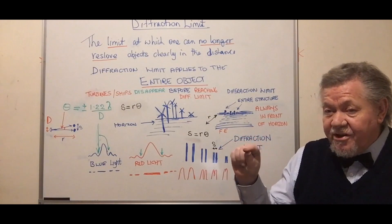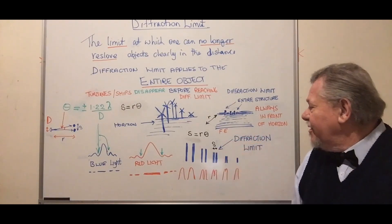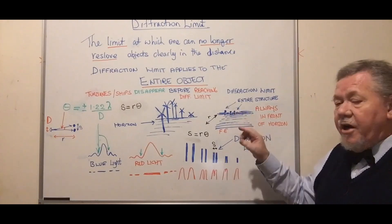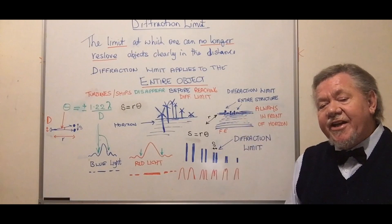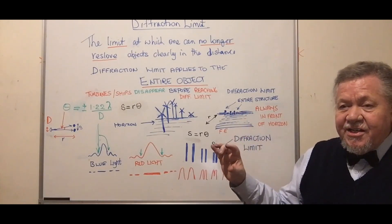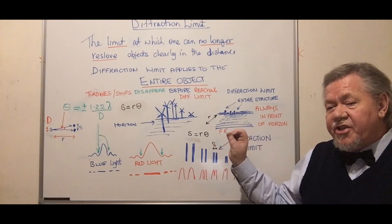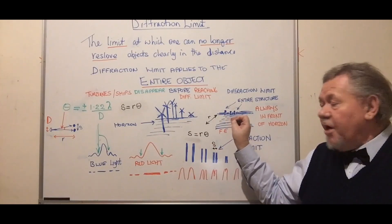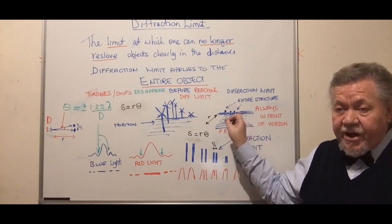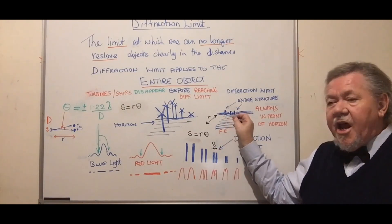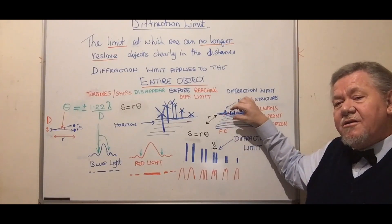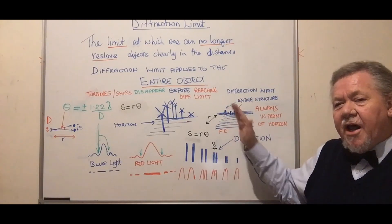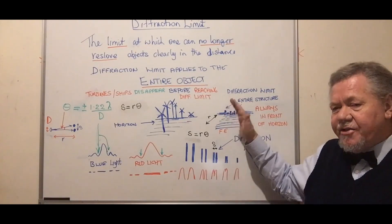With diffraction limit, things get smaller and smaller in the distance. The ones closer together will merge so you can't resolve them apart - you can't even tell there's two of them. They'll get smaller and smaller as well. Diffraction limit doesn't just apply in one plane - it applies to the entire object.